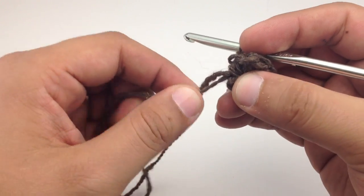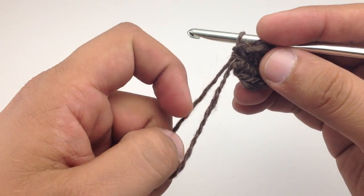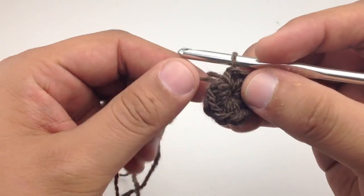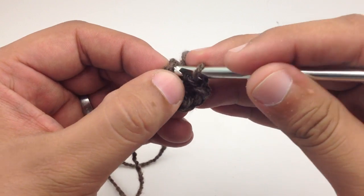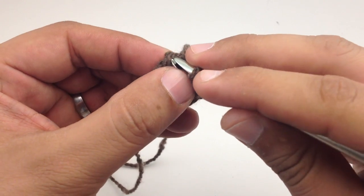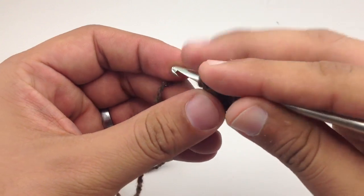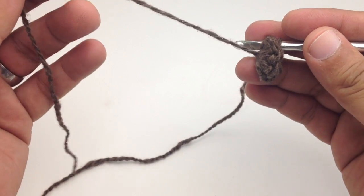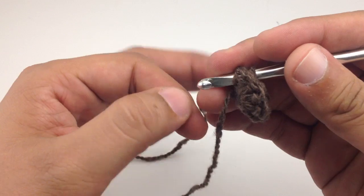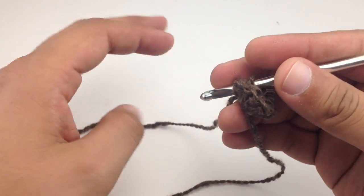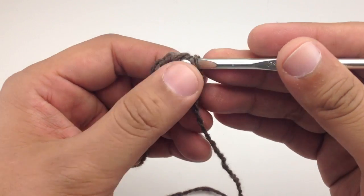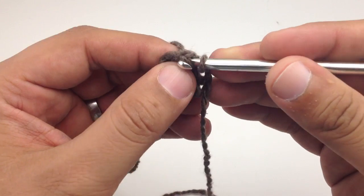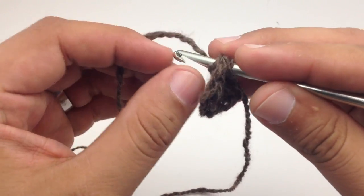And then we can just continue. We can finish our round with a slip stitch into our first stitch here. Make sure that we're not grabbing our tail to crochet with—we want to get the working yarn. Yarn over and draw through our first stitch here.